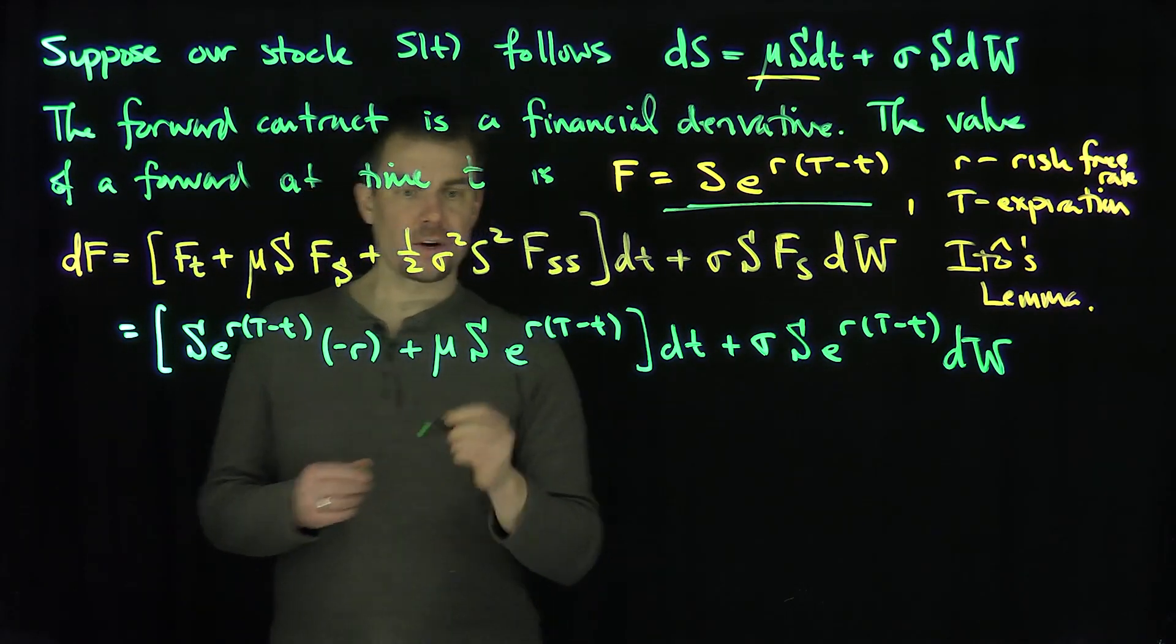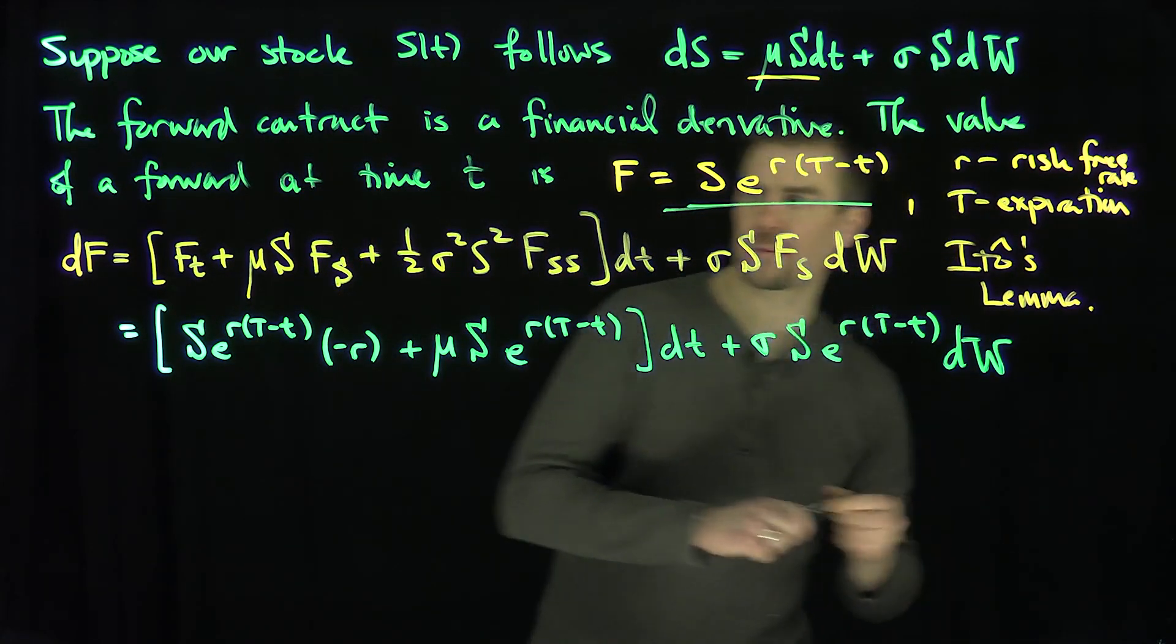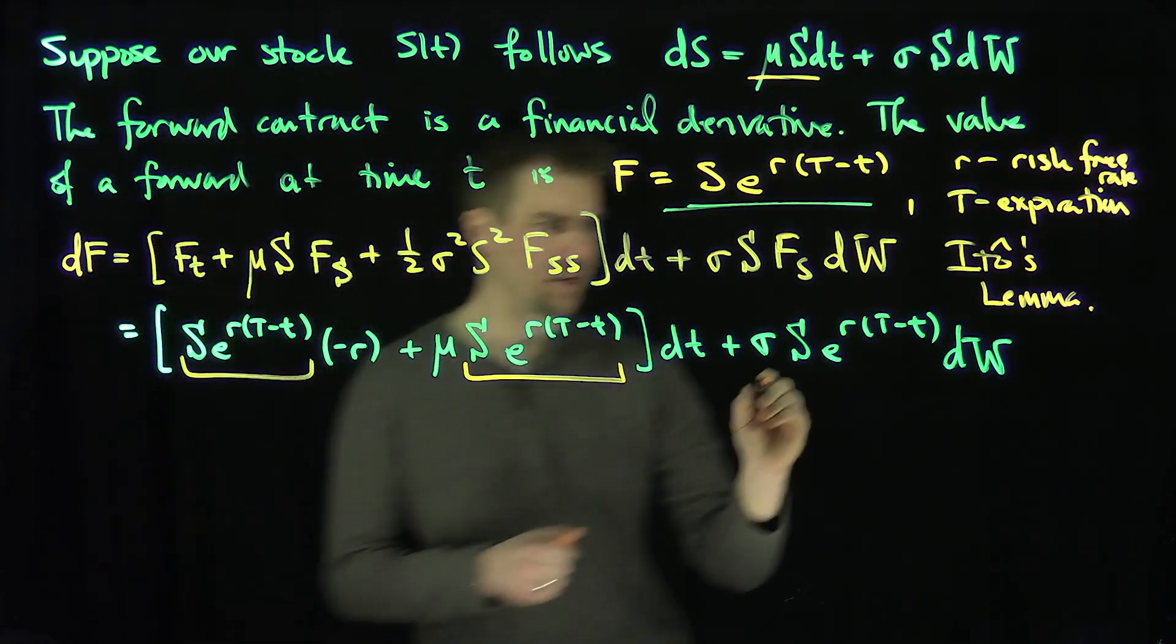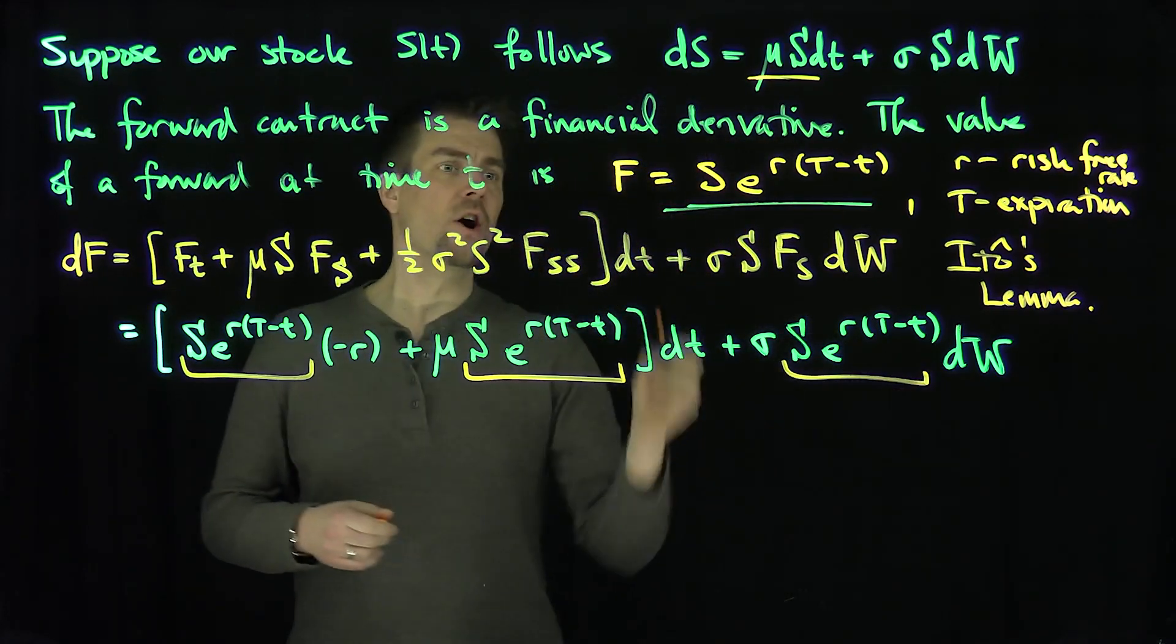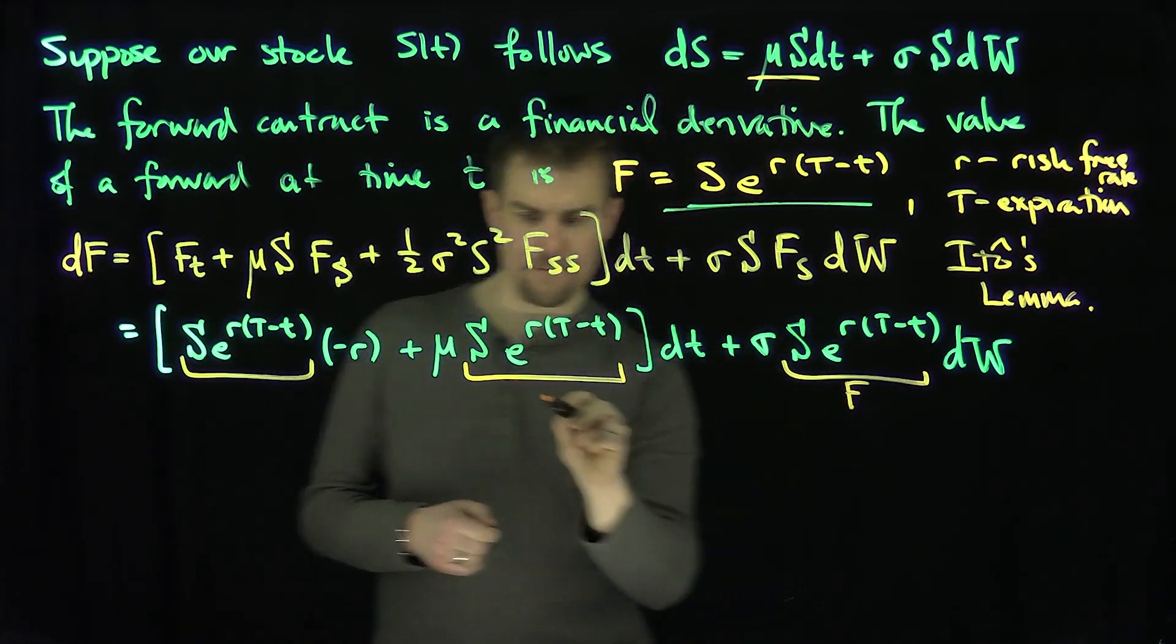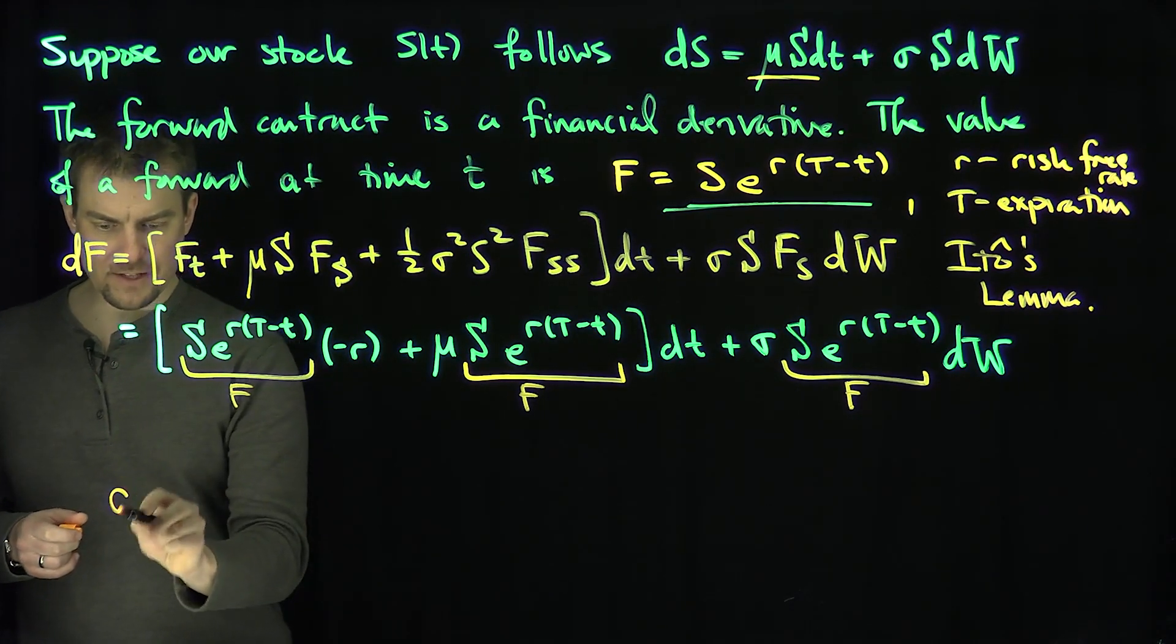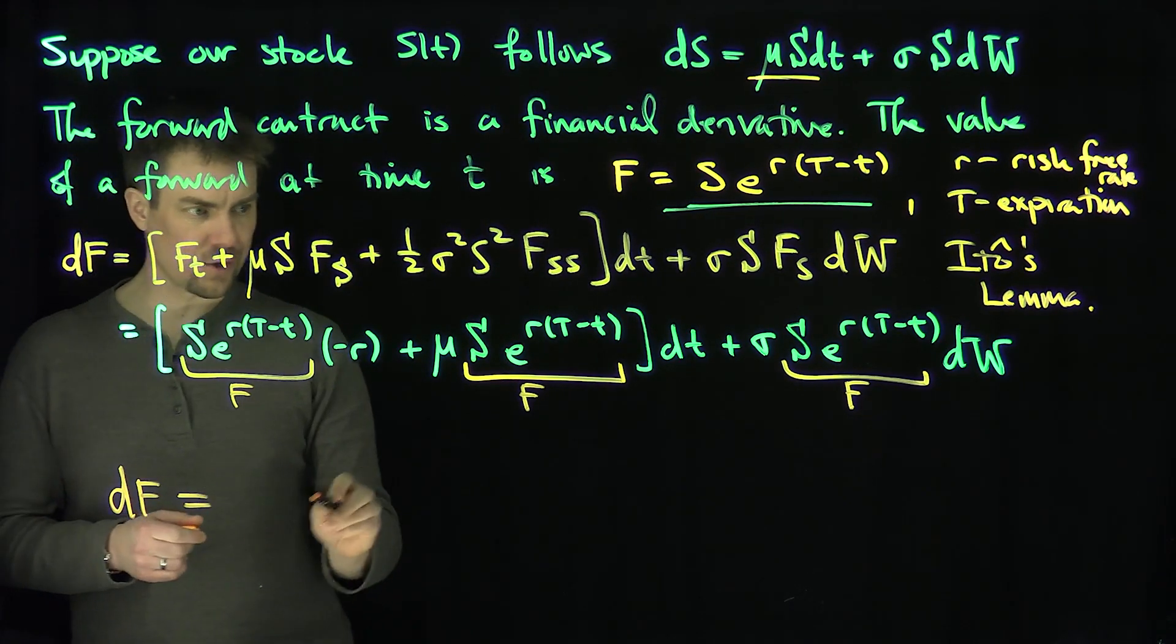Excellent. Now we can notice that this thing over here, so I have these terms: S*e^(r(T-t)), S*e^(r(T-t)), and S*e^(r(T-t)), are all the values of my forward contract. That's F, that's F, and that's F. So what we have is that dF is going to satisfy the following stochastic differential equation.